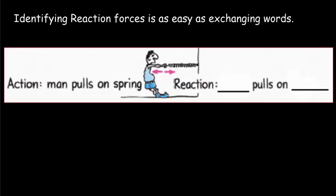Identifying force pairs is really easy. All you really need to do is exchange words. And by the way, which force we call the action force and which force we call the reaction force doesn't really matter. They're symmetrical. So, if we say the action force here is the man pulling on the spring, then all we have to do is reverse those two nouns and we'll get the reaction force. The reaction force would simply be that the spring pulls on the man.